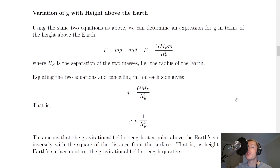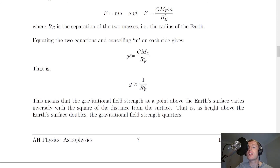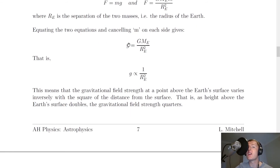Another application of Newton's Law of Universal Gravitation is to look at the variation of gravitational field strength g with height above the Earth. Using the same two equations — F equals mg and F equals G times ME times m over RE squared — and cancelling the m on each side gives small g equals big G times ME over RE squared. This is our inverse square law: gravitational field strength is directly proportional to one over the radius squared, meaning it varies inversely with the square of the distance.